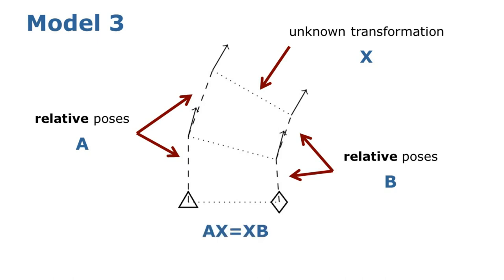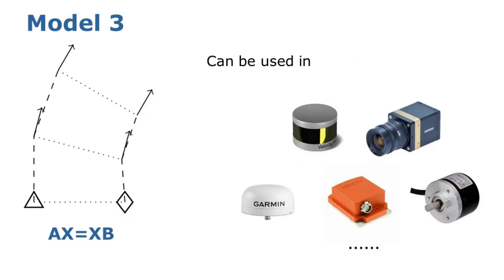In which we replace the absolute poses with the relative ones, and the equation for this model becomes Ax equals XB. The third model is the most general model and can be used in almost all sensor configurations.